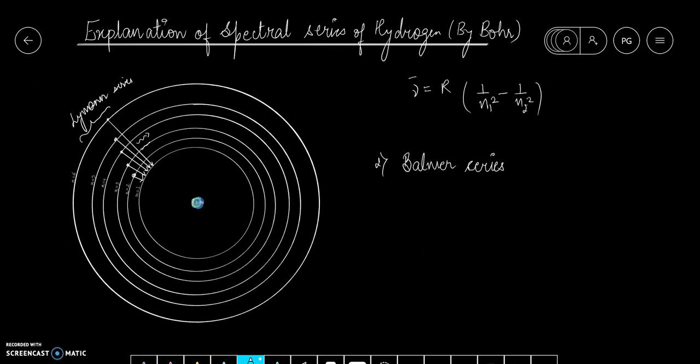Now, the second series is Balmer series, in which the value of n1 is 2. All the electrons which are jumping from higher orbits to n equals 2 count in the Balmer series. In this case, n2 can take any value from 3, 4 and so on.